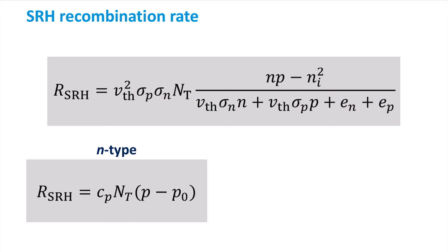For n-type material, we are then left with three terms in the equation. The hole capture coefficient Cp, the trap density Nt, and the excess hole concentration. The same equation is true for p-type material, where p and n are interchanged, resulting in the electron capture coefficient and excess electron concentration.